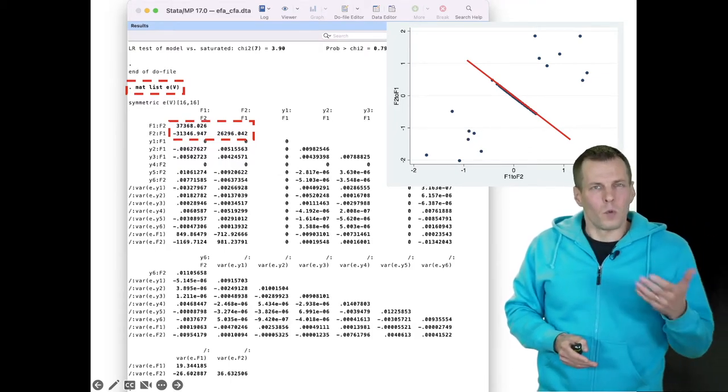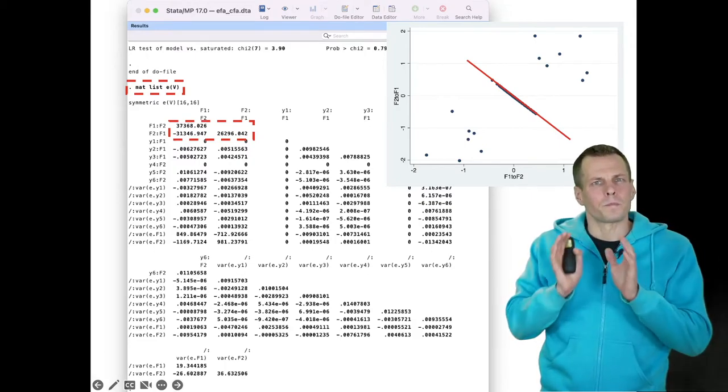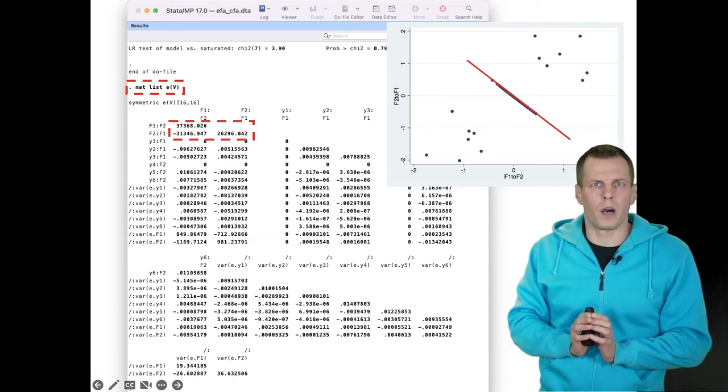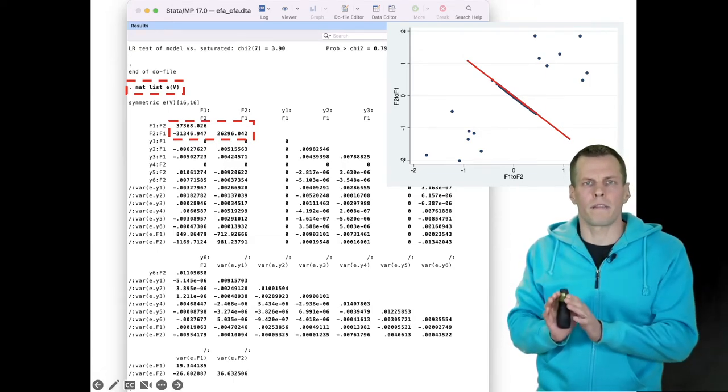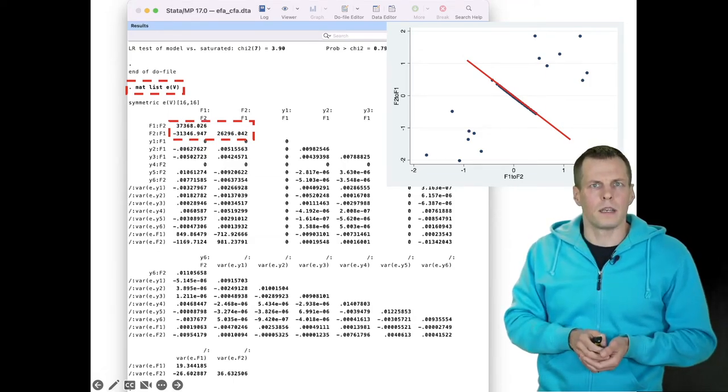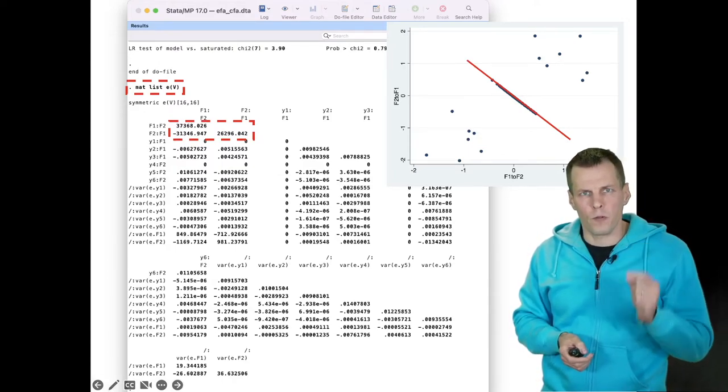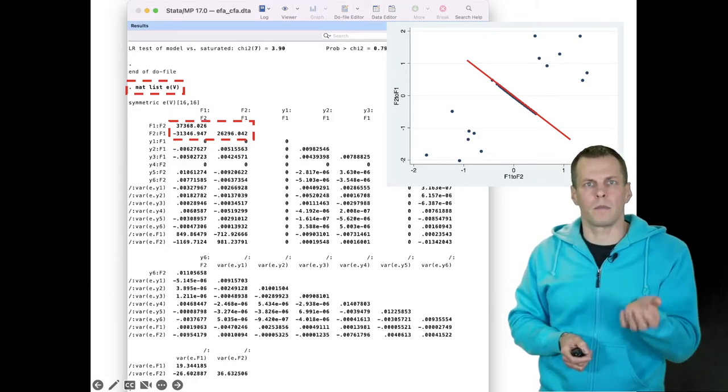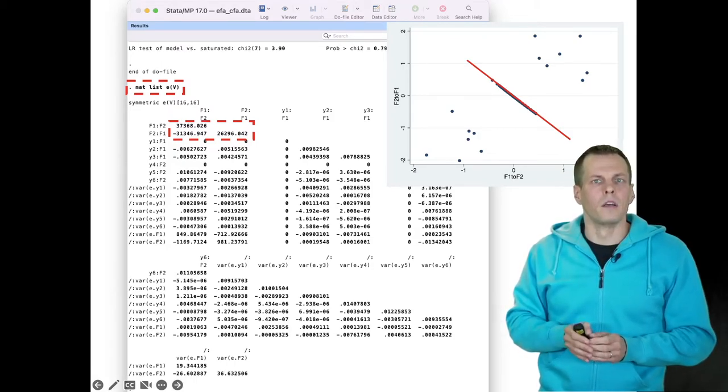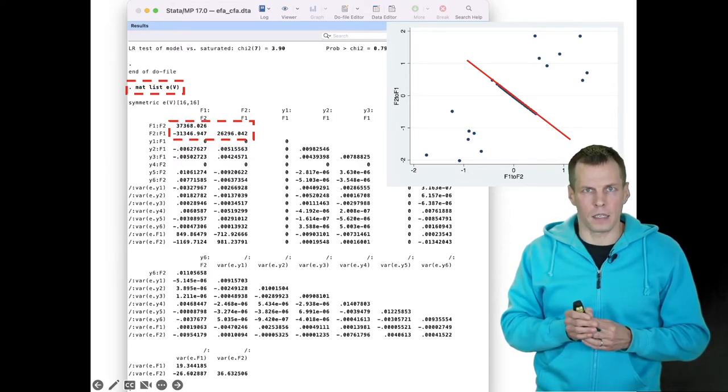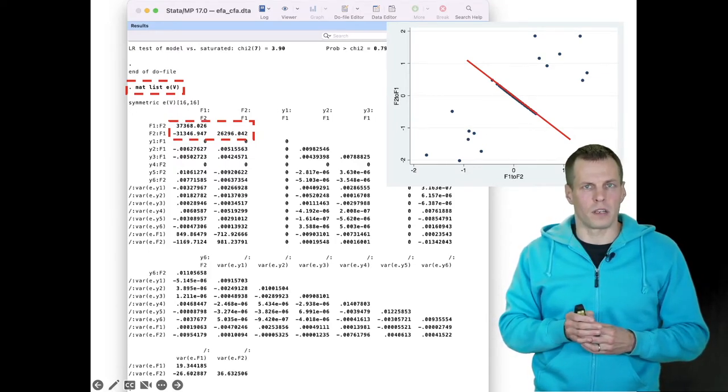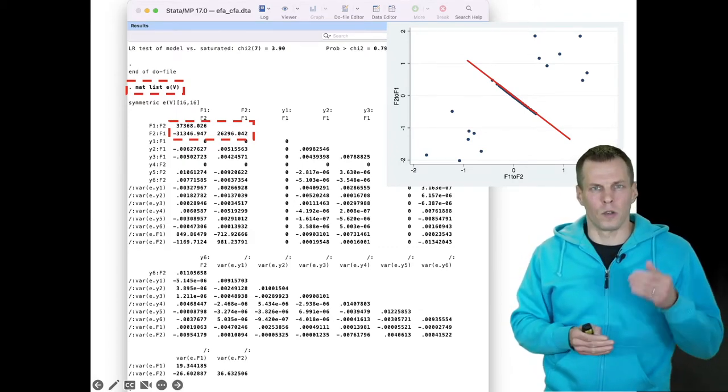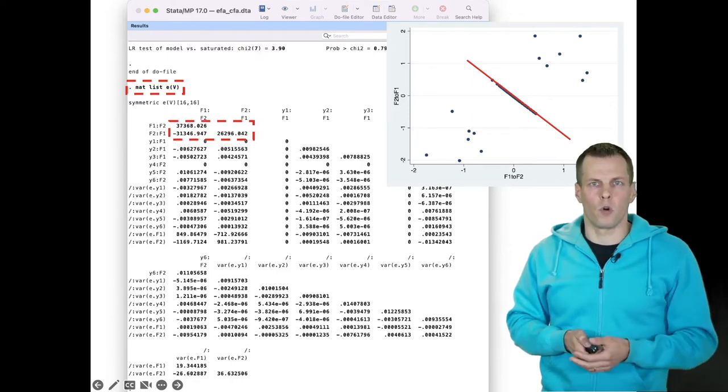You can spot where the identification problem is by printing out the variance-covariance matrix of the estimates and then check if any estimates are almost perfectly correlated, either positively or negatively. If a pair of estimates is perfectly correlated, then both of those estimates can't be estimated from the same data. You have to adjust the model, or if it's empirical under-identification which is sample specific, then collect more data.